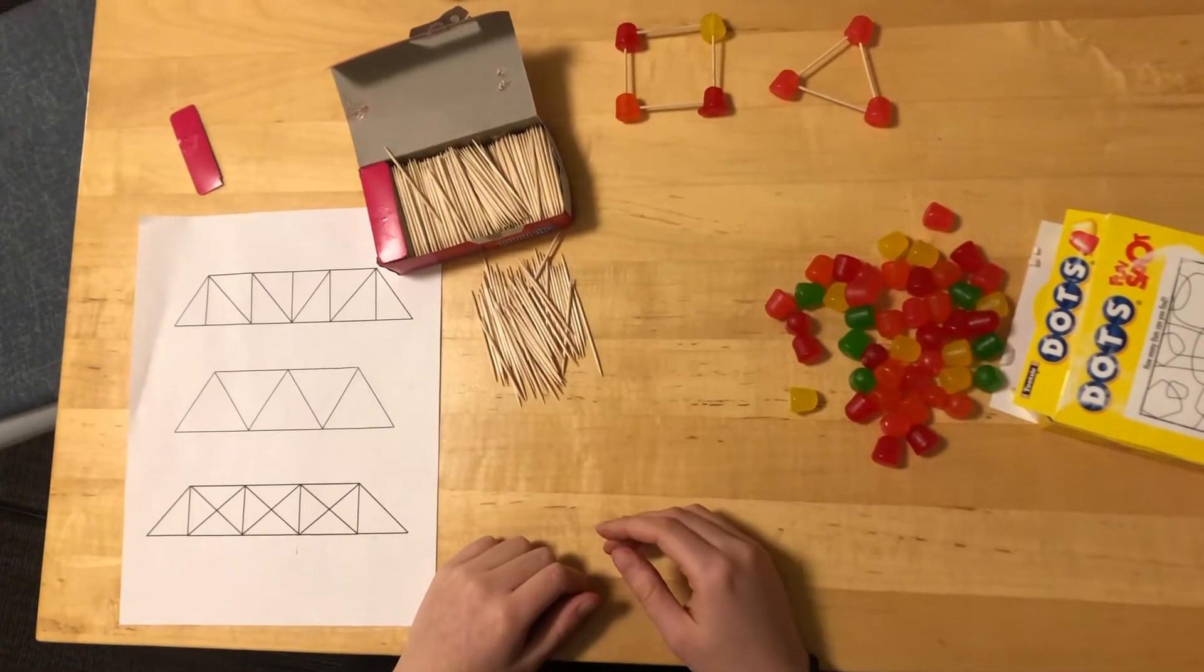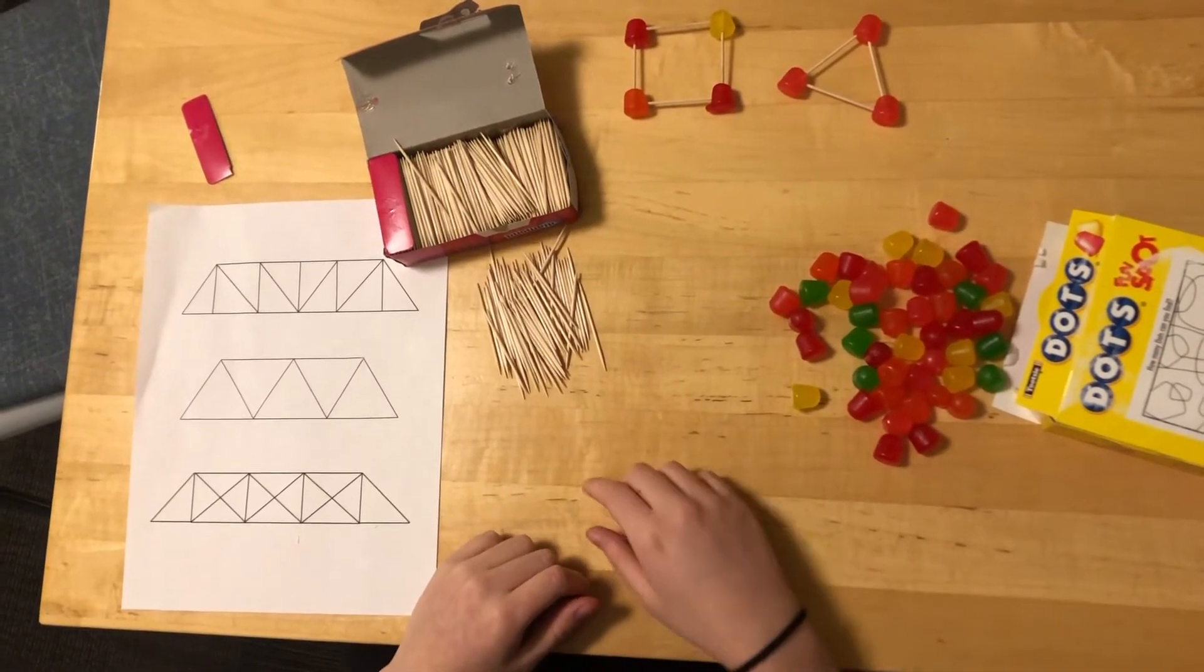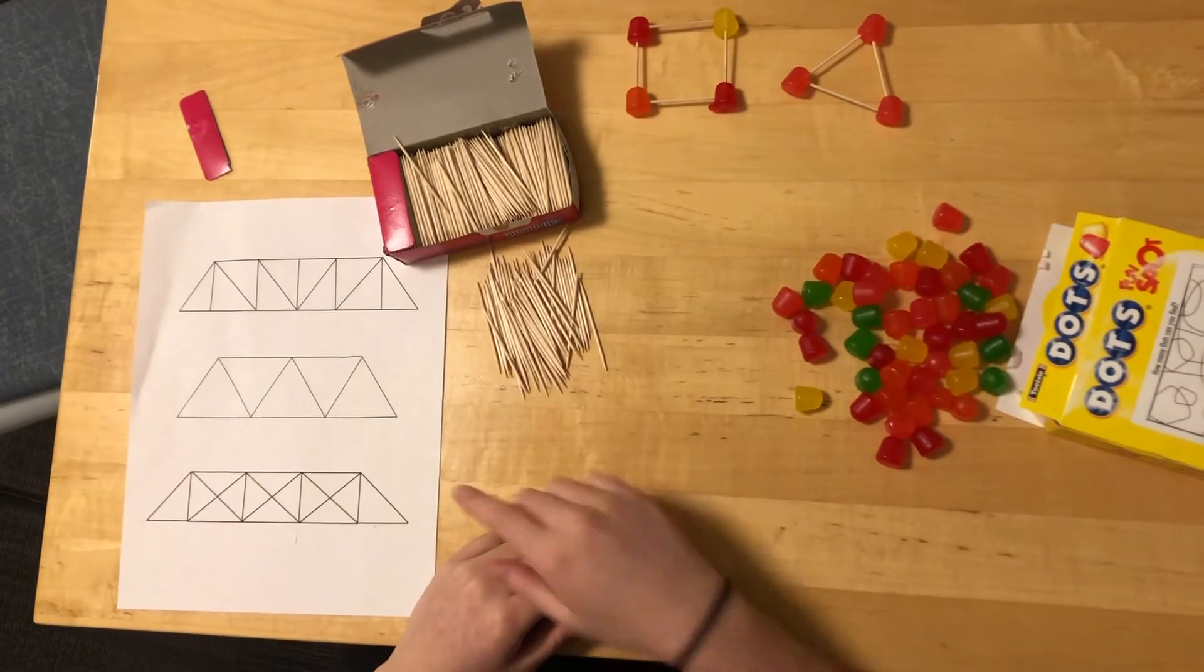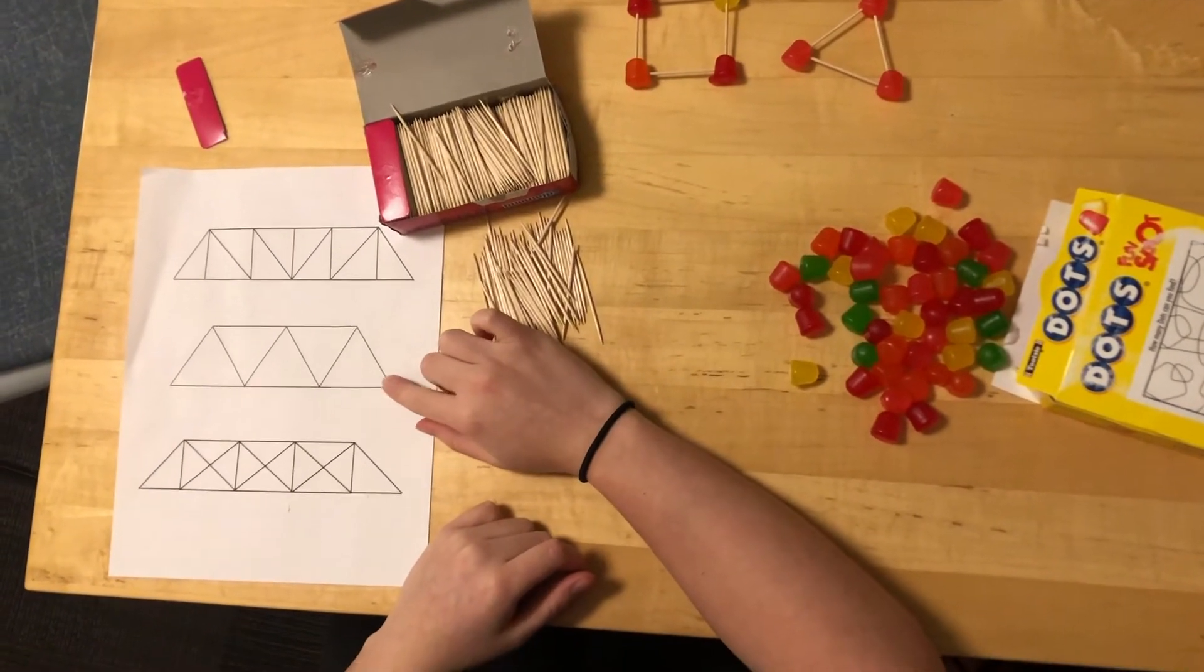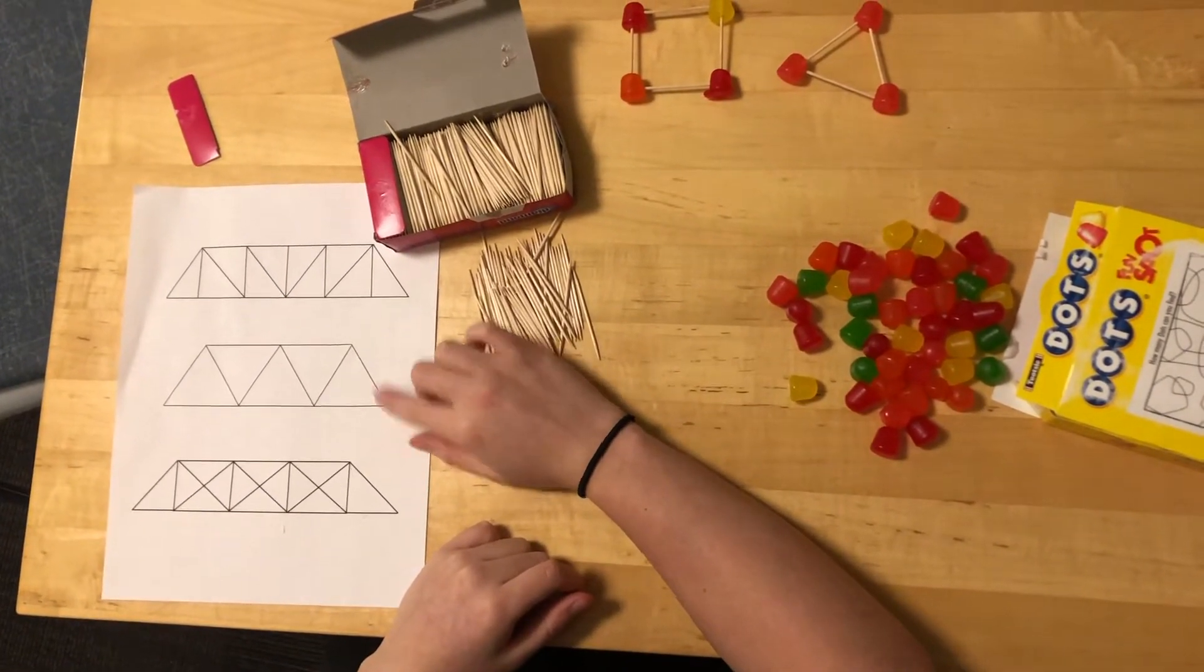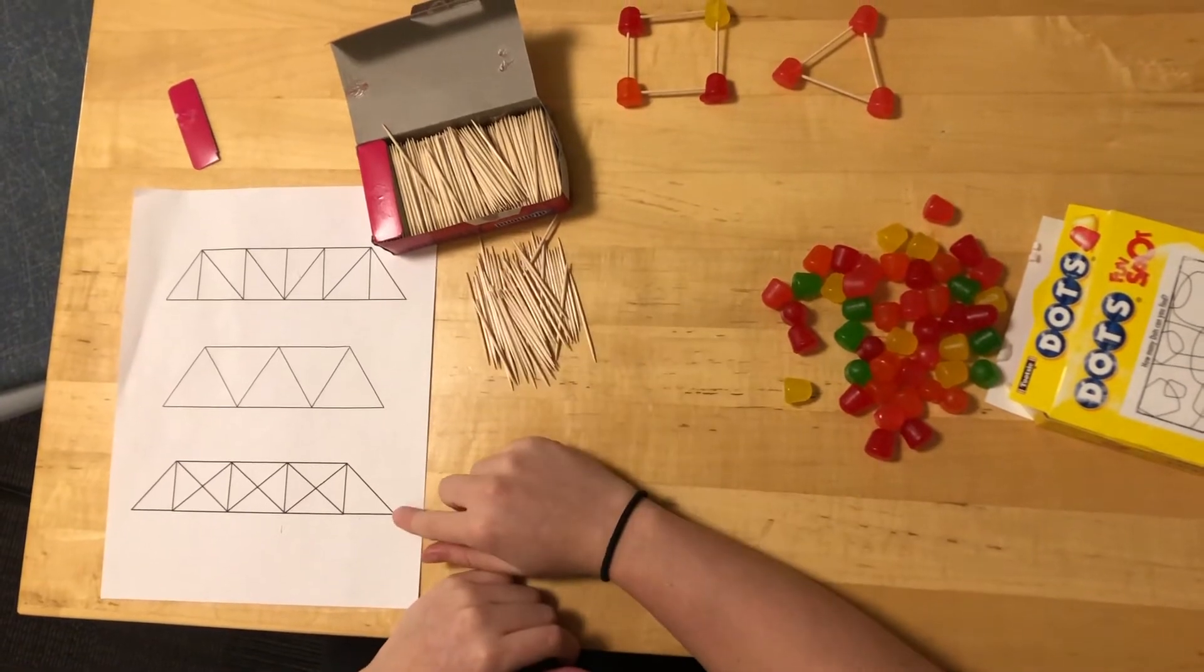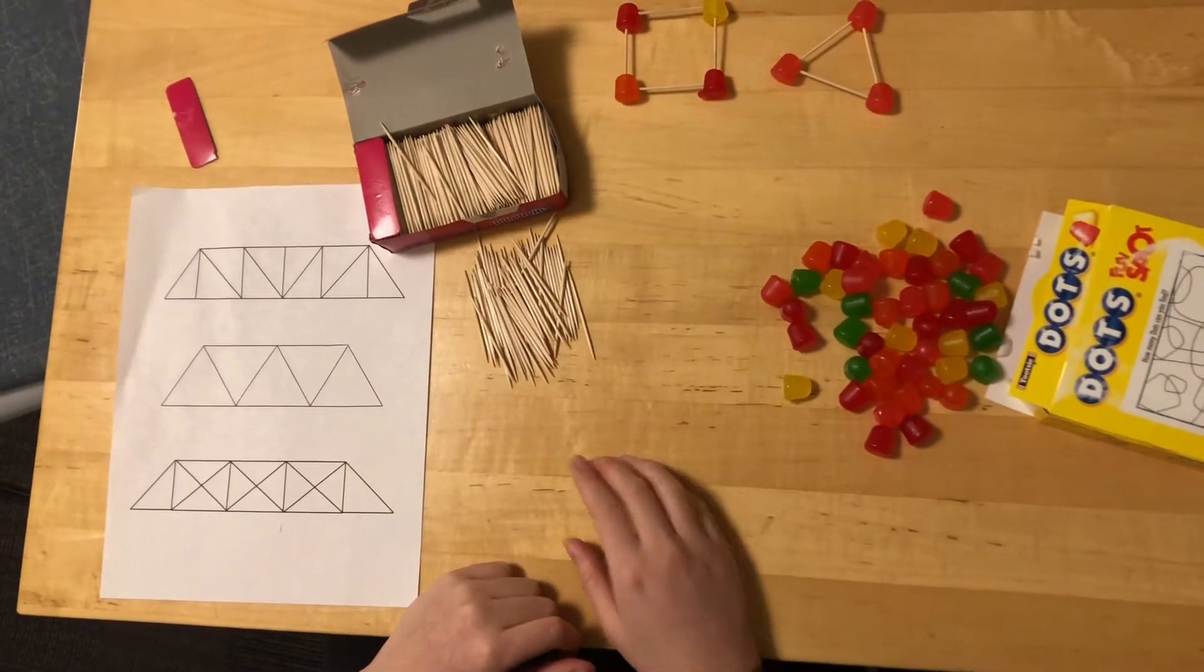First we'll start by picking which design we want to try to imitate. If we were working with a young kid such as a kindergartner we will choose the middle design, but as the kids increased in age we would pick a more complex design or the most complex design. For this video we're going to use this one.